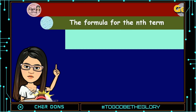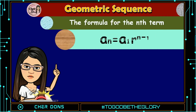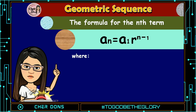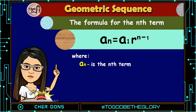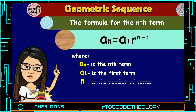Here is the formula for finding the nth term of a geometric sequence: A sub n is equal to A sub 1 multiplied by r raised to n minus 1, where A sub n is the nth term, A sub 1 is the first term, n is the number of terms, and r is the common ratio.